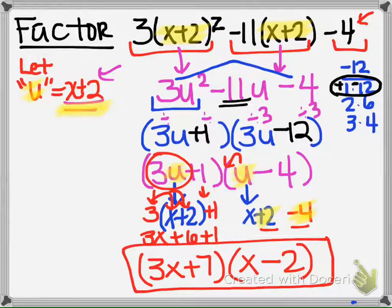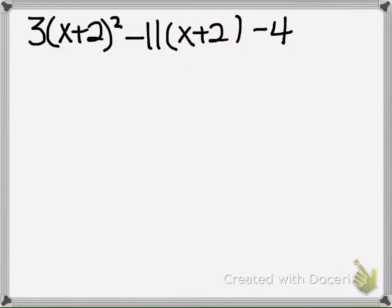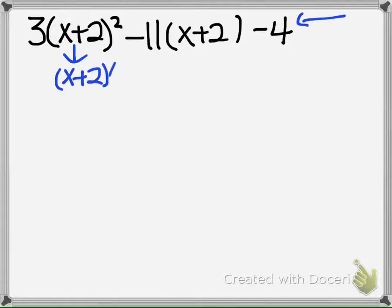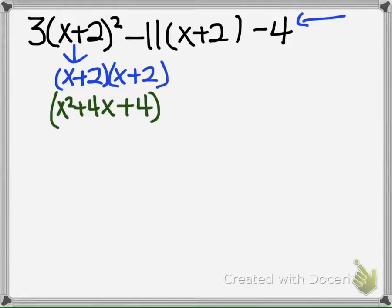Now, the other way to do this without the u-substitution requires a lot more work. You would have to FOIL all of this, or multiply all of this, and simplify the whole entire problem. What I mean by that is we would have to do the exponents first, and we would have to figure out what (x plus 2) times (x plus 2) is. When you do x plus 2 times x plus 2, you'll end up with a simplified polynomial. Then you bring down the 3, and then we're going to have to distribute the 3.